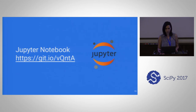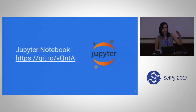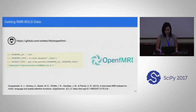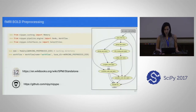We provide a notebook available on this link. We try to show how to use it from fetching the data until getting results. We get data from OpenFMRI, which has fMRI data publicly available. We also provide a workflow for preprocessing the data — it's quite standard, using SPM through Nipype.